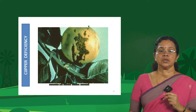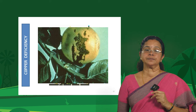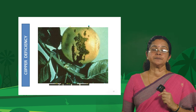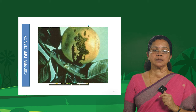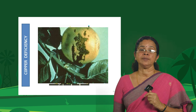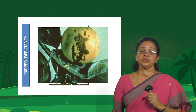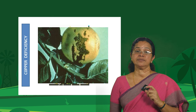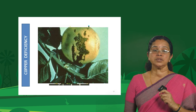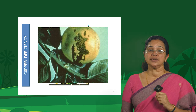Pictures show copper deficiency in rice and pepper. In lettuce, you can see the leaves become twisted and narrow — a typical copper deficiency symptom. In lime, the fruit quality is visibly affected.